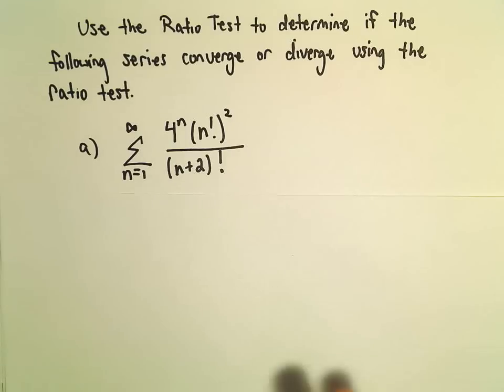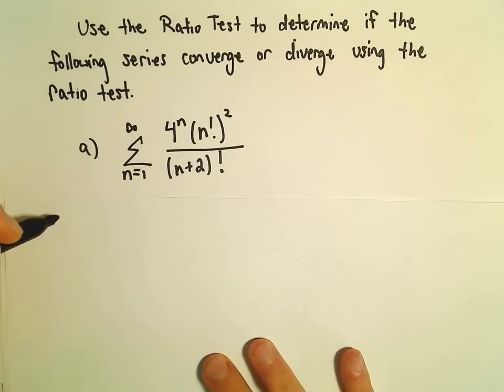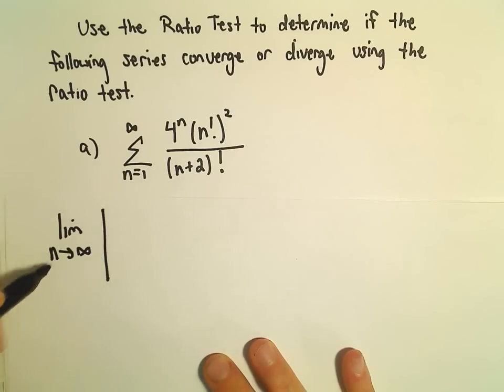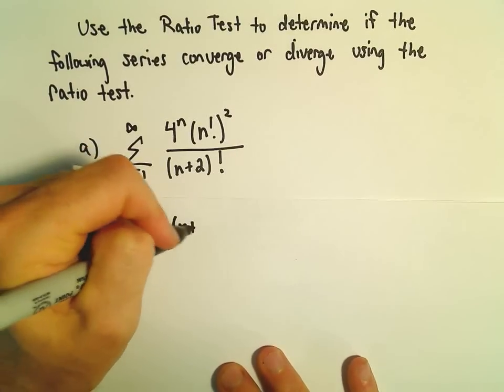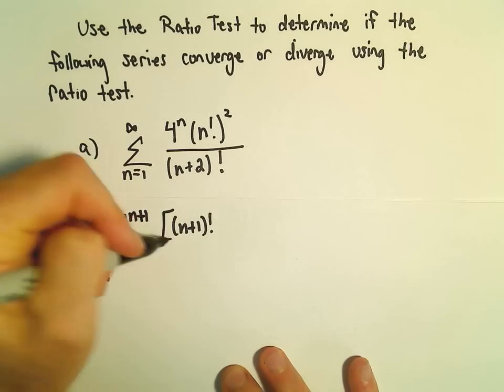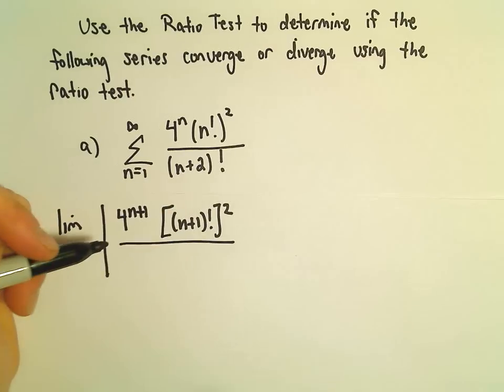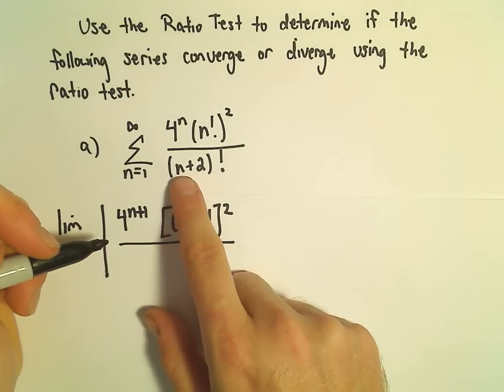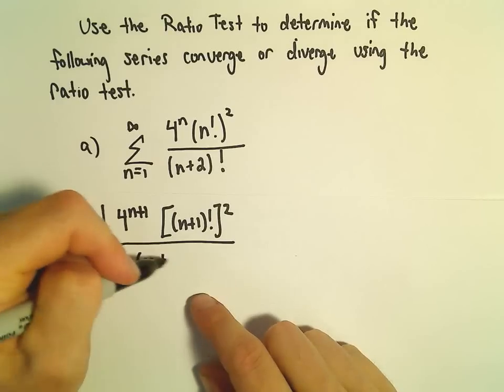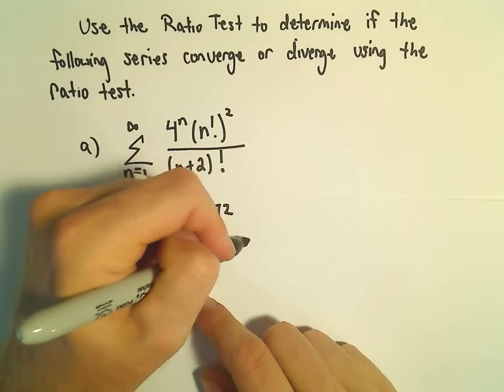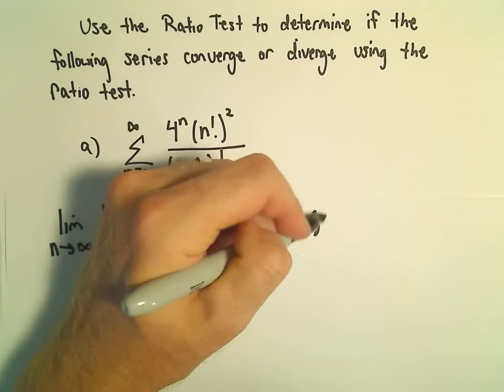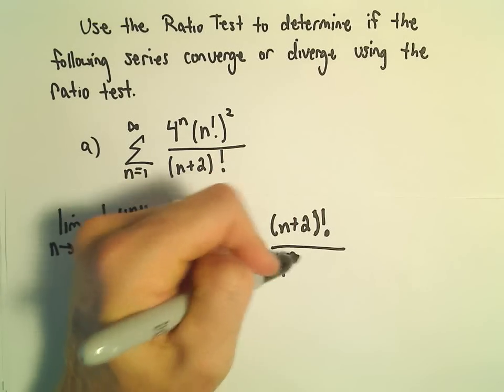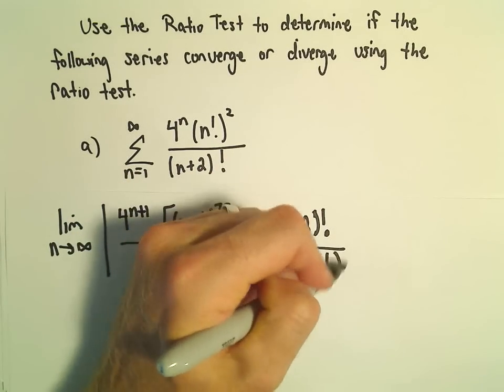I think the thing that will probably make this one most confusing is just the factorials, so we'll just have to be a little careful when we simplify those. The limit as n goes to infinity, we would have 4 to the n plus 1. Then we would have n plus 1 factorial squared. We would replace the n with n plus 1, so we would have n plus 1 plus 2, or n plus 3 factorial. We can multiply by the reciprocal n plus 2 factorial over 4 to the n times n factorial squared.